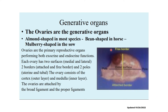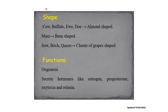For ruminants — cow, buffalo, ewe, and doe — the ovary is almond-shaped or oval. For the mare, it is bean-shaped or kidney-shaped. For the sow, bitch, and queen, it resembles a cluster of grapes or mulberry shape. In terms of functions, it has a function for gametogenesis — that is, the production of ova — and it also secretes hormones. Aside from estrogen and progesterone, it also secretes relaxin and oxytocin.